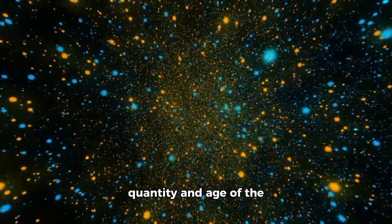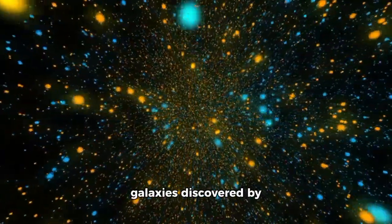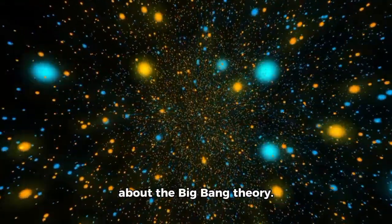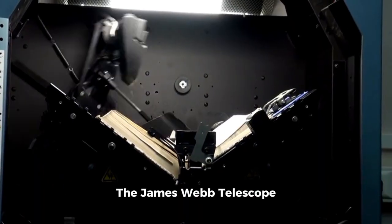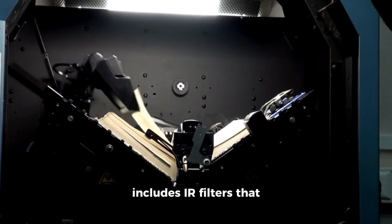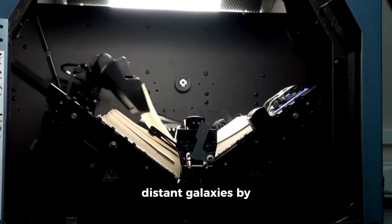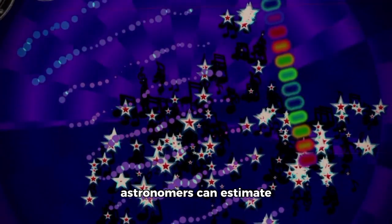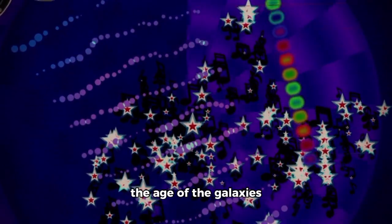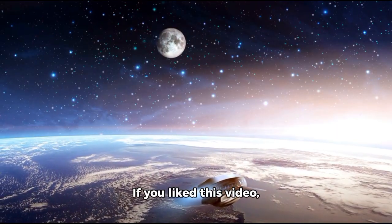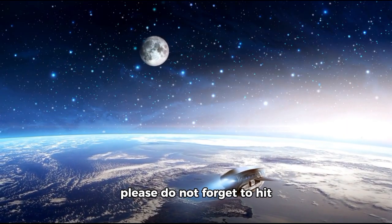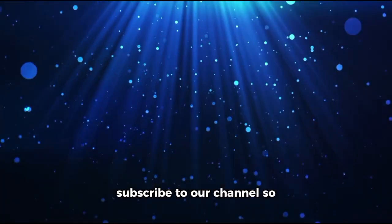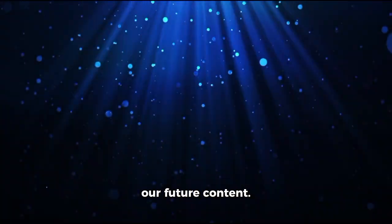Additionally, the quantity and age of the galaxies discovered by the James Webb Space Telescope further challenge the truth about the Big Bang Theory. The James Webb Telescope includes IR filters that make it possible to study distant galaxies by analyzing their color. By examining these hues, astronomers can estimate the age of the galaxies and their stars. If you liked this video, please do not forget to hit the like button, share it, and subscribe to our channel.